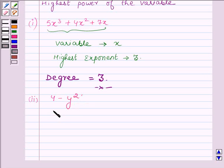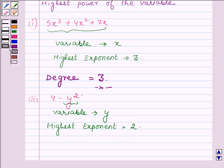Here the variable is y. There is only one term which contains y and the highest exponent is 2. Therefore, the degree of this polynomial is 2. This completes the second part.